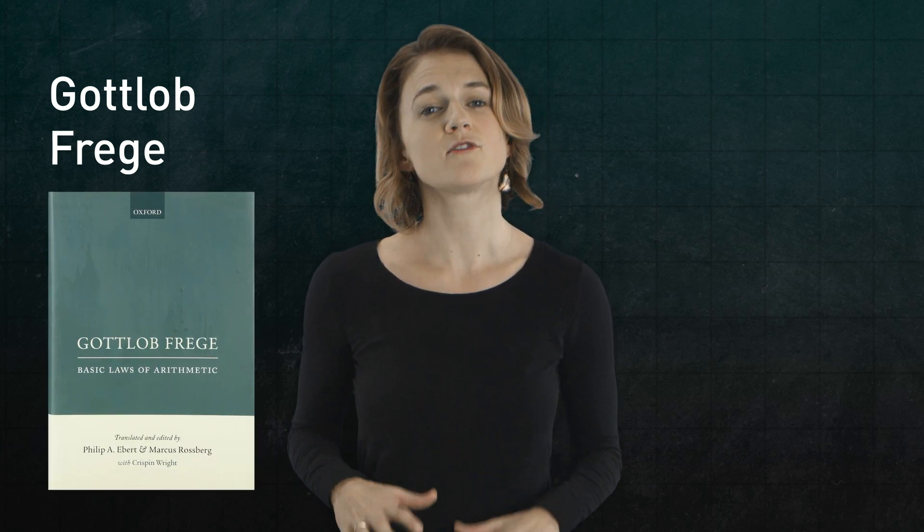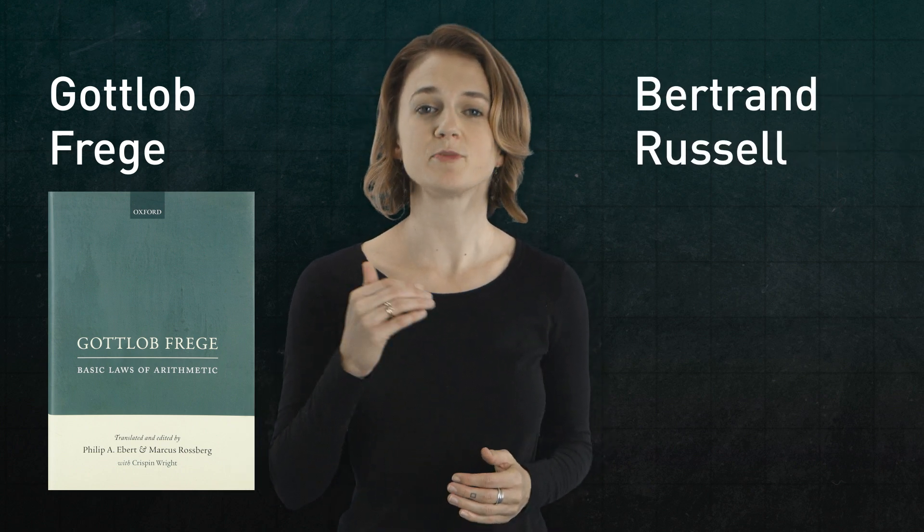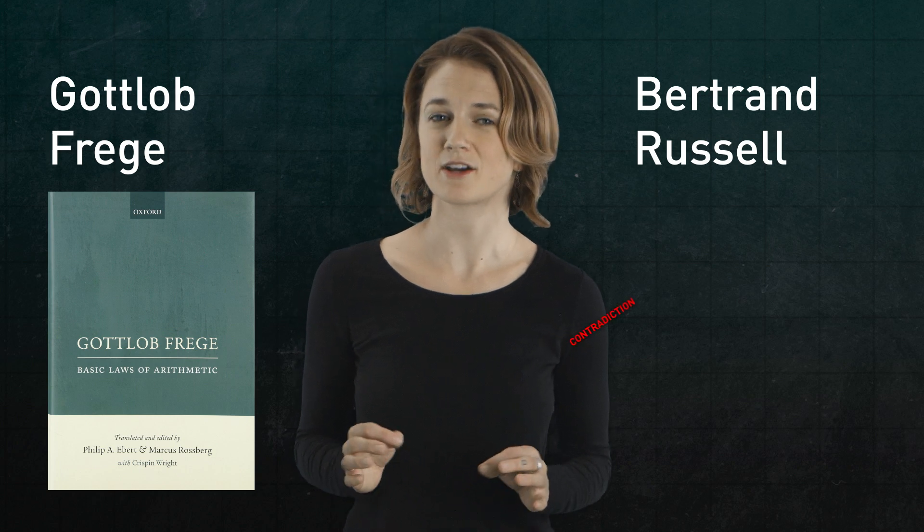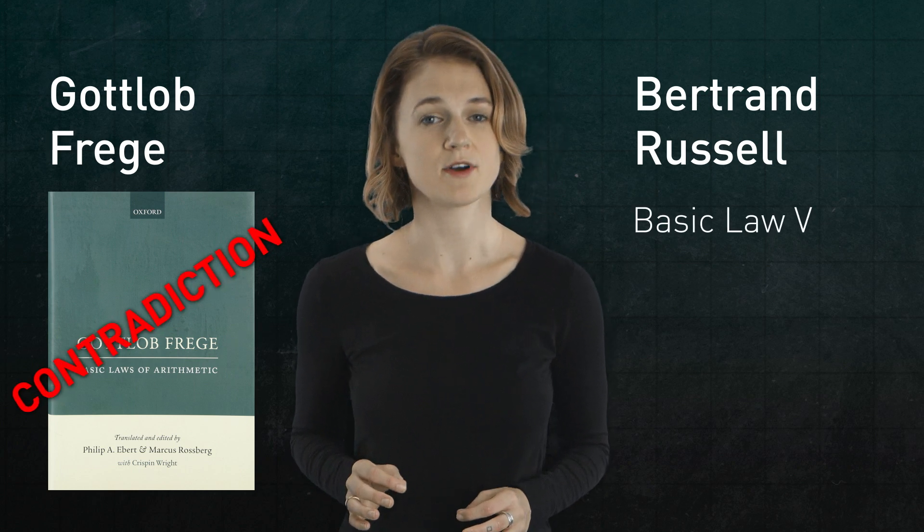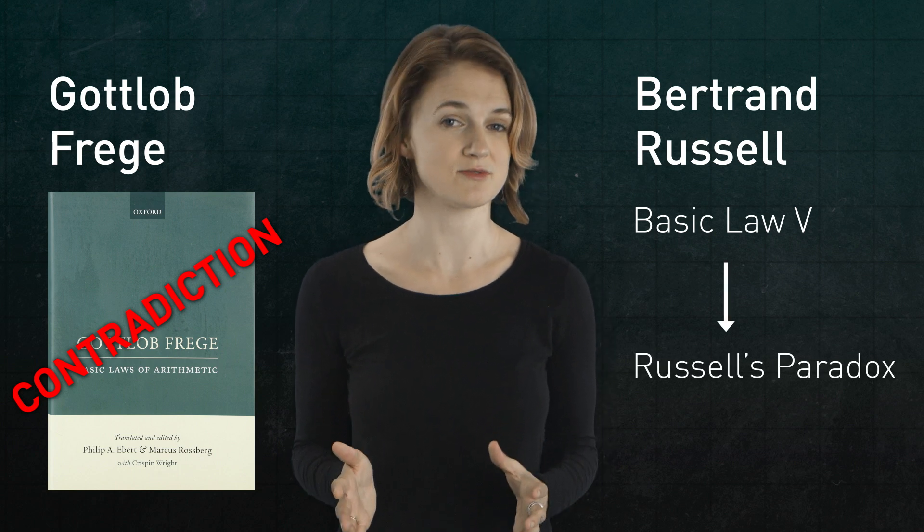In the late 1800s, Gottlieb Frege became the first person to earnestly attempt to carry out the logicist project. He spent years developing an extensive system of logical axioms and notation, a foundational system, from which he derived the basic laws of arithmetic. The project seemed to be a logicist success, until Bertrand Russell rather famously ruined it. Just as Frege's book was going to press, Russell pointed out that Frege's system contained a contradiction. Using the Basic Law 5, one could derive Russell's paradox, the set of all sets that do not contain themselves.